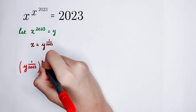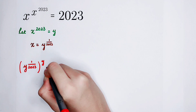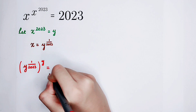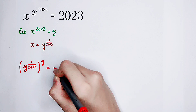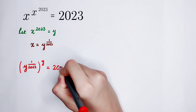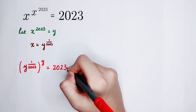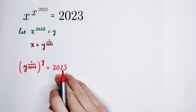So this equation becomes an equation about y. The right-hand side is still a number — this lucky number, this new year number: 2023.